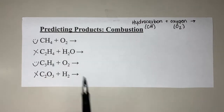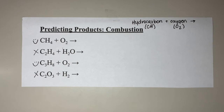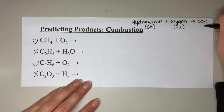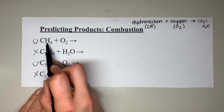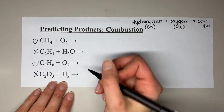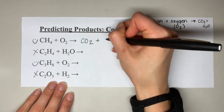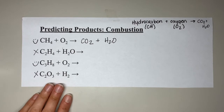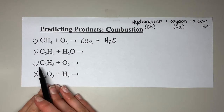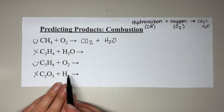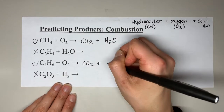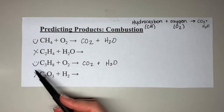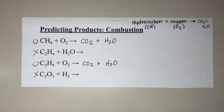We were left with two that were actually combustion reactions. Now we need to predict the products. Remember, combustion reactions — no matter what the hydrocarbon is — all form the same exact products: carbon dioxide and water. So methane reacting with oxygen gives carbon dioxide and water. Propane reacting with oxygen also gives carbon dioxide and water. It doesn't matter what the subscripts are — the products are always carbon dioxide and water.